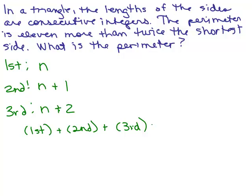And it says that's going to be the same thing as 11 more than twice the shortest side. So I'm going to take twice the shortest side, which in this case would be the first side, and I'm going to add 11 to it. So let's actually write down what those pieces are.